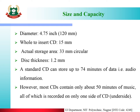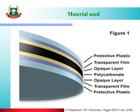However, most CDs contain only about 50 minutes of music, all recorded on only one side — the underside. The materials used in CD layers include: protective plastic, transparent film, opaque layer, polycarbonate, another opaque layer, transparency layer, and protective plastic.